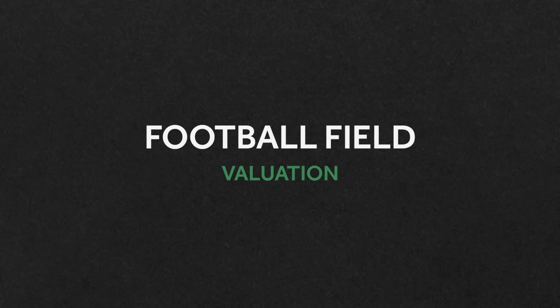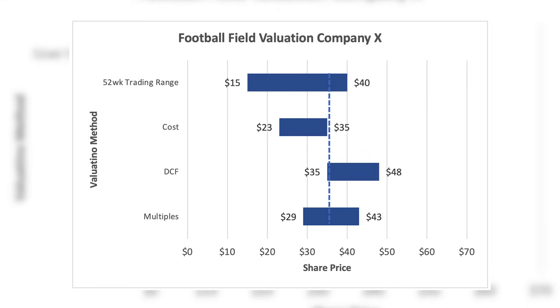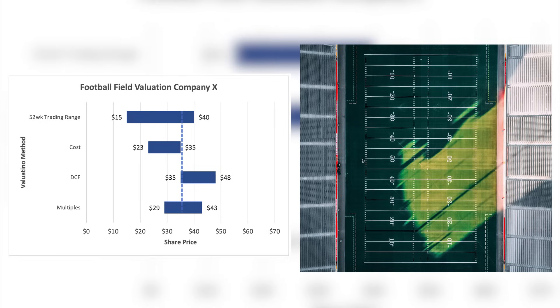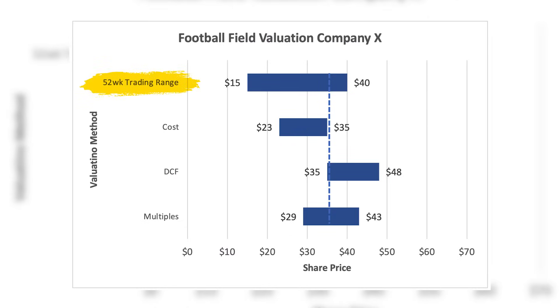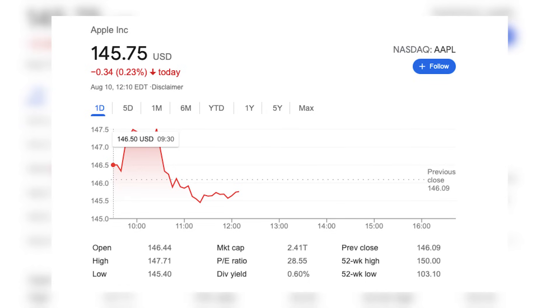As you've seen, none of the three methods are actually perfect — they all have flaws somewhere. That's why valuation is regarded as both an art and a science. This brings us to the football field valuation: because none of the methods are perfect, analysts bundle them together in a graph that looks like this, providing a range of values. It's called a football field because that's what it resembles. It also typically includes a 52-week high and low range showing how the share price fluctuates over the last year. Overall, analysts are looking to derive a valuation range, not a specific number.